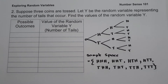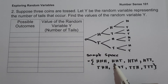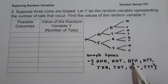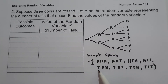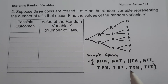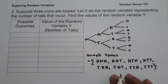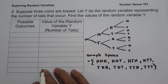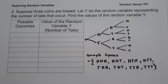So the sample space for this experiment is: head-head-head, head-head-tail, head-tail-head, head-tail-tail, tail-head-head, tail-head-tail, tail-tail-head, and tail-tail-tail. We will use this to complete the given table by counting the number of tails in each outcome and assigning a number to each.